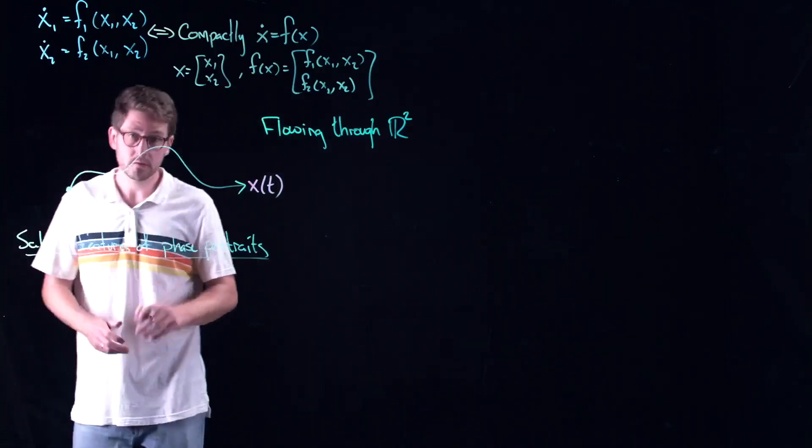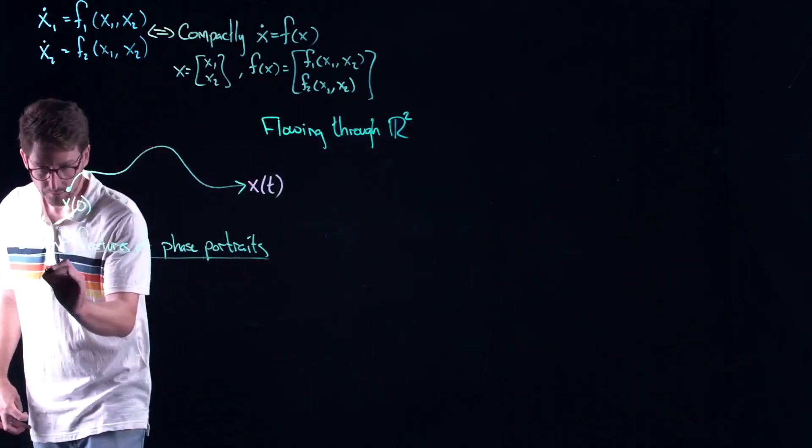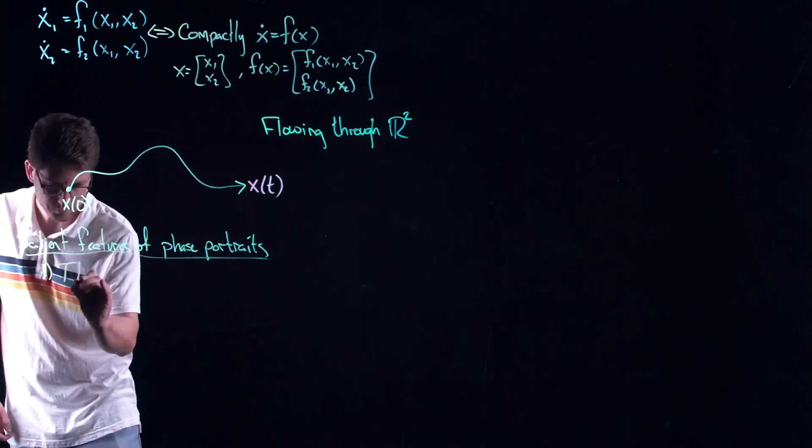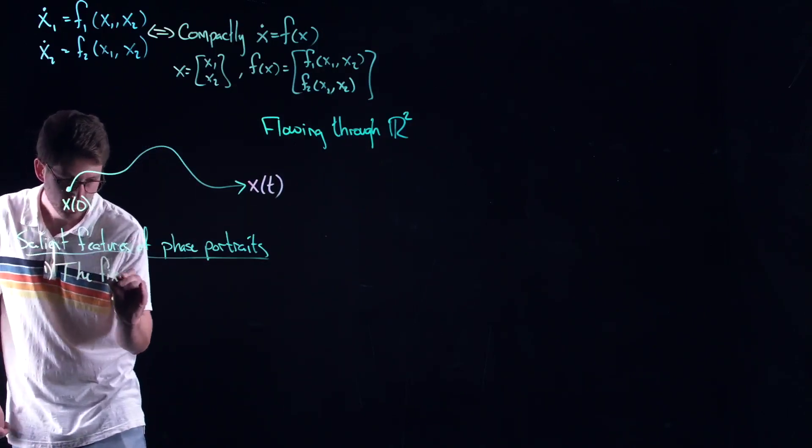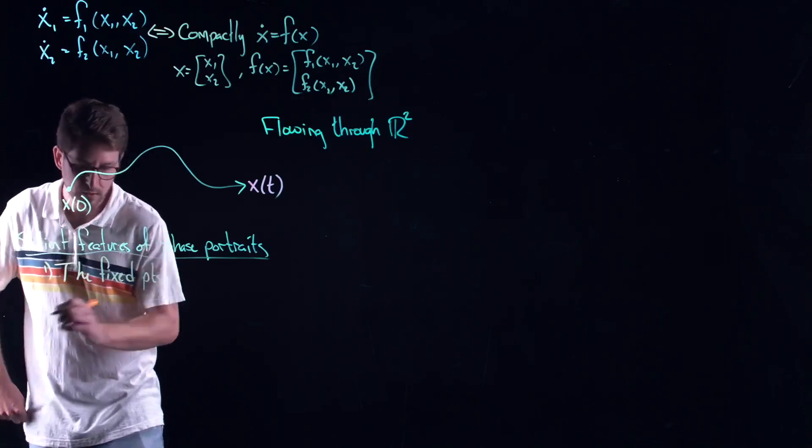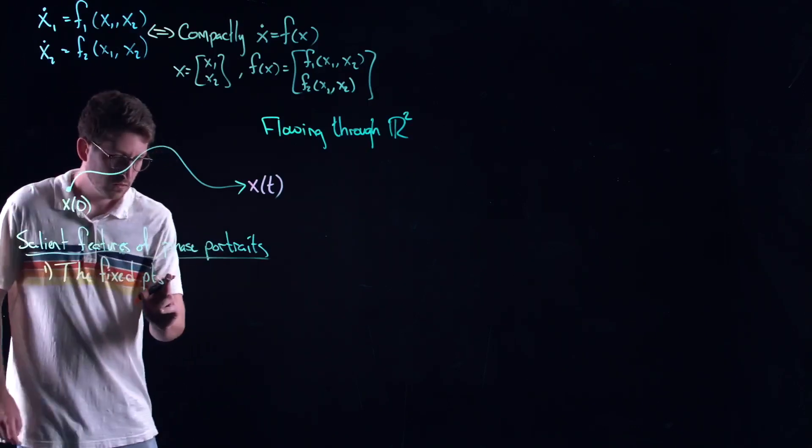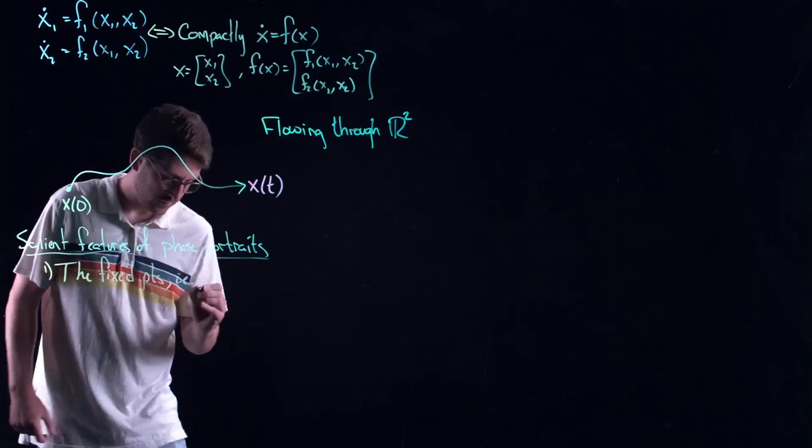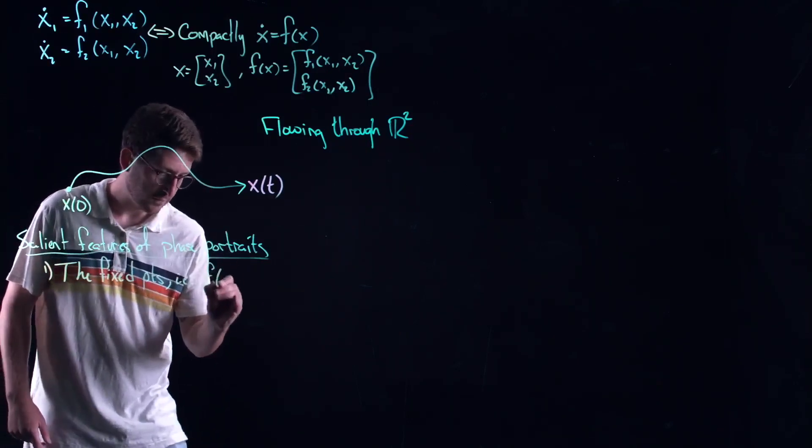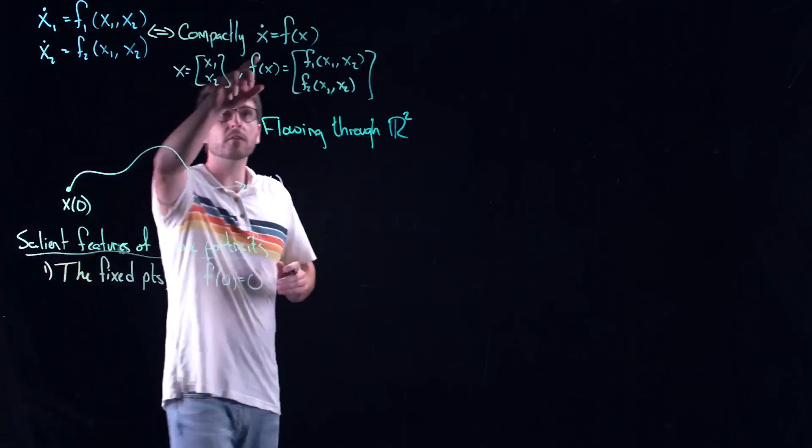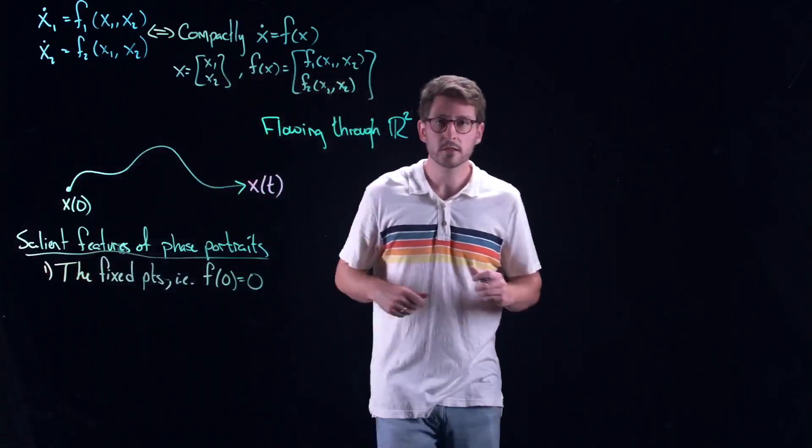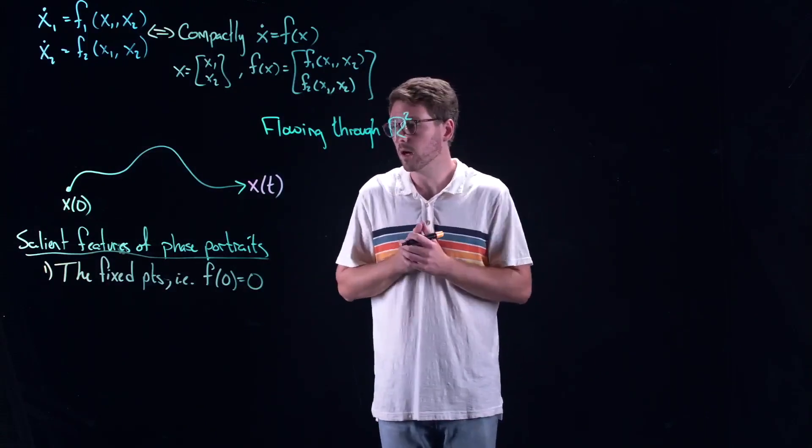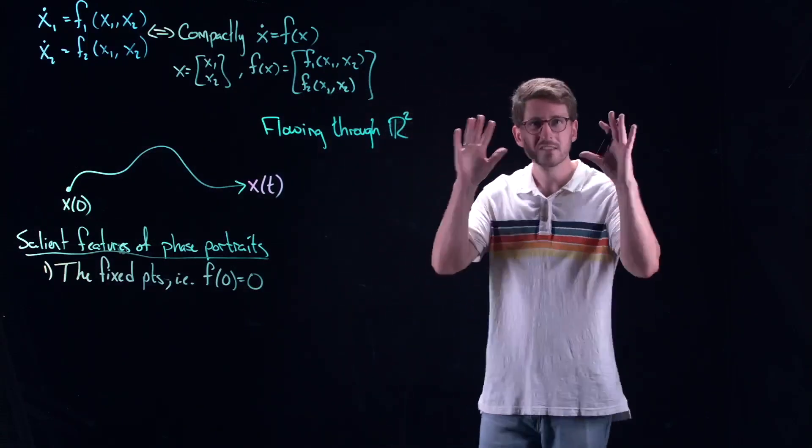You can think of this as being your initial condition x0, and you're moving in time on this parametric curve x of t. It's these parametric curves that we use to draw what's called a phase portrait or a phase diagram of these planar dynamical systems.